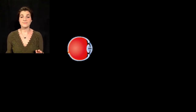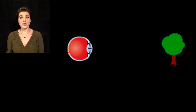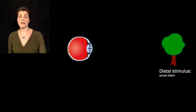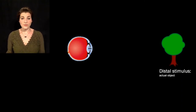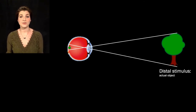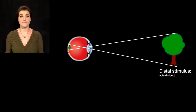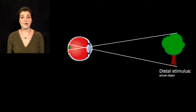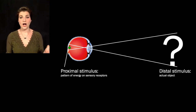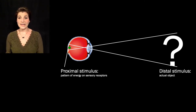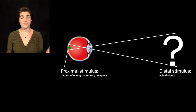Imagine that you and your eyeballs are standing out in a forest looking at a tree off in the distance. We refer to the tree as the distal stimulus—the real object out in space that you're seeing. The information your brain gets about the tree is a function of activity from the photoreceptors it stimulates. Your brain can't see the tree; it's just getting information about the amount and type of light present on one region of the retina. We refer to that as the proximal stimulus—the pattern of energy on your sensory receptors.